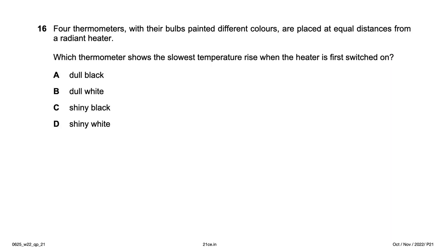Four thermometers with bulbs painted different colors are placed at equal distance from a radiant heater. Which shows the slowest temperature rise? Black absorbs well so black bulbs react quickly. Between shiny white and dull white, shiny white reflects the most energy, so it shows the slowest temperature increase — option D, shiny white.